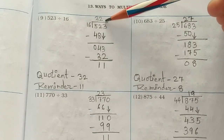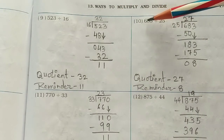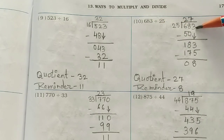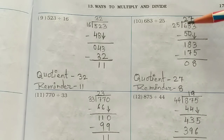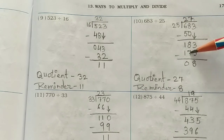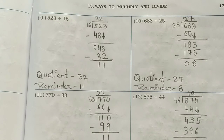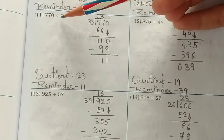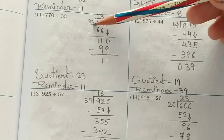Question 10: 683 divided by 25. Write 25 here. 25 twos are 50 — subtract from 68 and you get 18. Write 18, bring down the 3 to get 183. 25 sevens are 175 — remainder is 8 and your answer is 27.